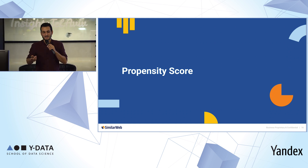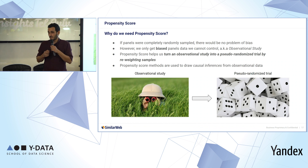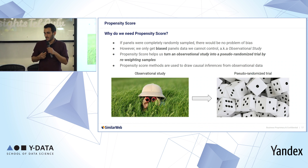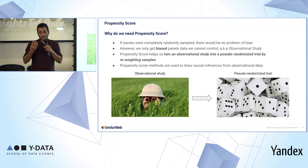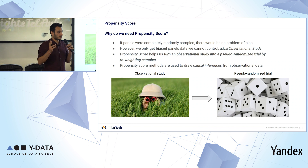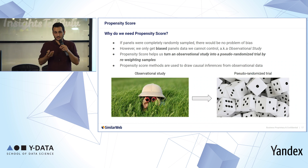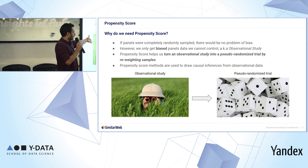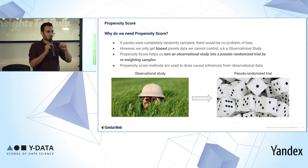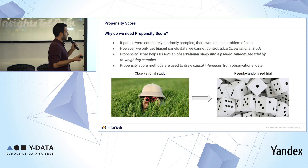This is where propensity score comes to the front stage. What is propensity score and why do we need it? If panels were randomly sampled — which we know they are not — we'd have no problem. But they are biased, and this is also called an observational study. Propensity score helps us turn an observational study into a pseudo-randomized trial by re-weighting samples. Propensity score methods are used to draw causal inferences from observational data — data we can't control. We just get it and need to do something with it.